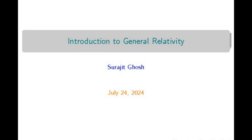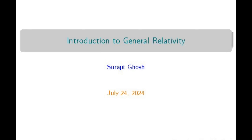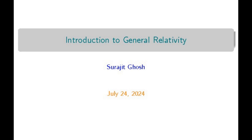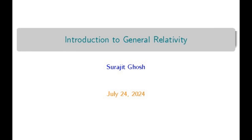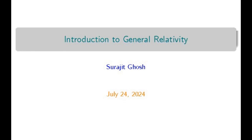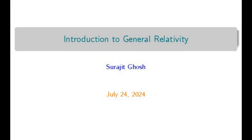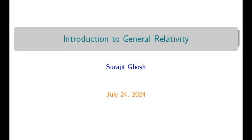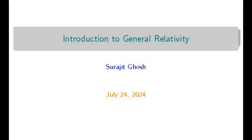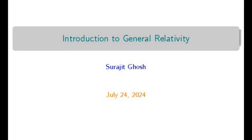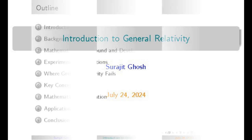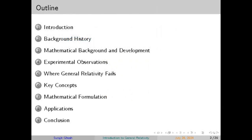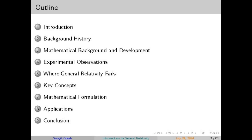General relativity was developed by the brilliant mind of Albert Einstein in 1915. Before Einstein, we relied on the laws of gravity put forth by Isaac Newton, which worked well for everyday experiences but fell short when it came to explaining certain cosmic phenomena. Einstein's theory changed everything by describing gravity not as a force, but as a curvature of space-time. Let's dive into the incredible story of how this revolutionary theory came to be, the key concepts it introduced, and the stunning discoveries it has led to.